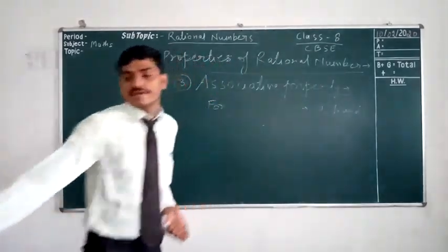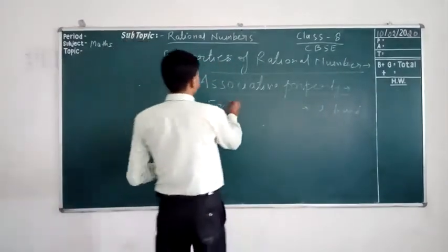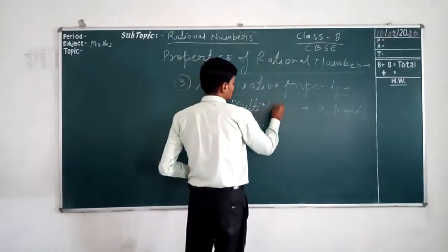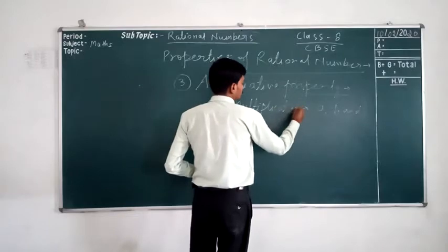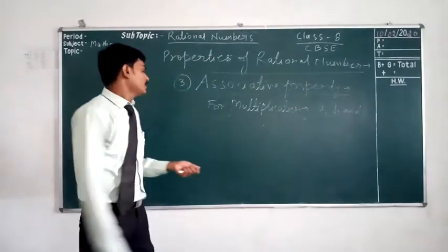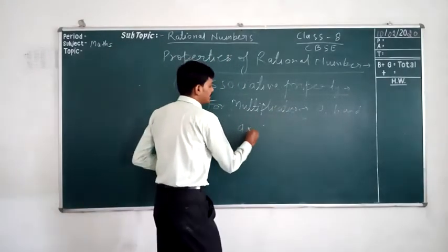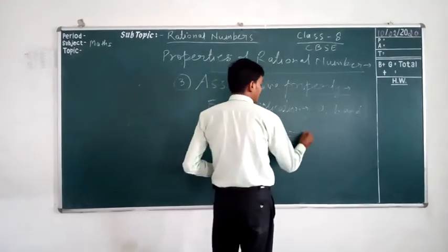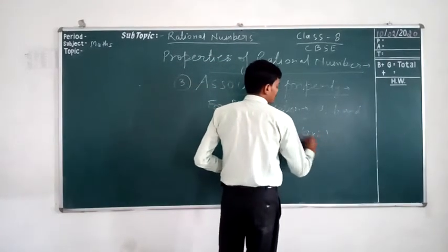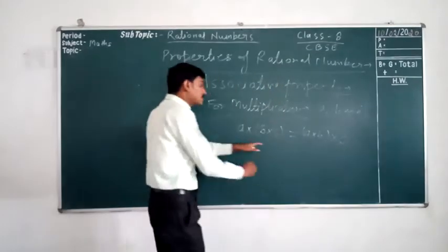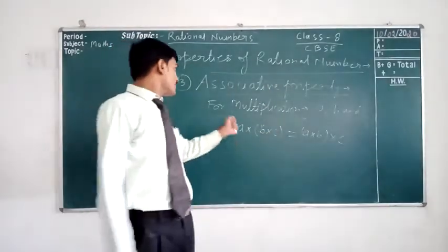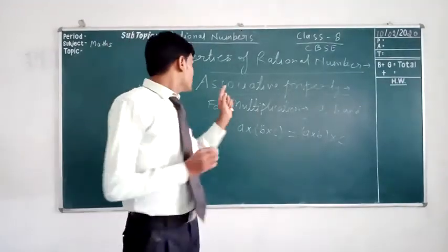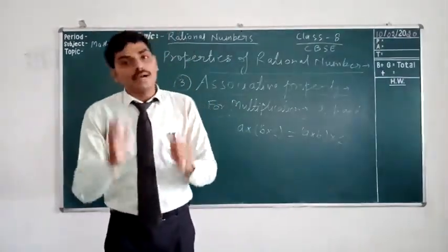Now, come for multiplication. For multiplication, (A × B) × C equals A × (B × C). After changing the grouping, the result is the same. So we can say that rational numbers are associative for multiplication.